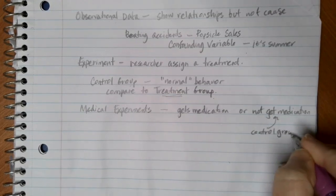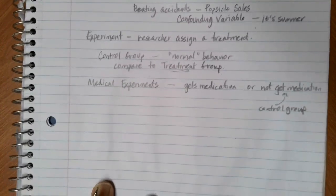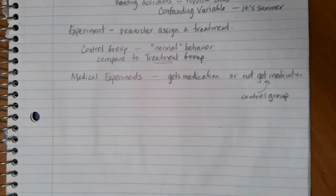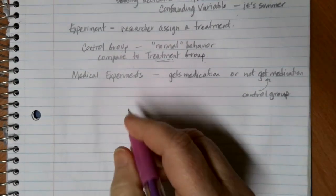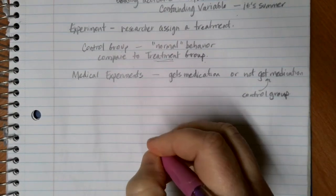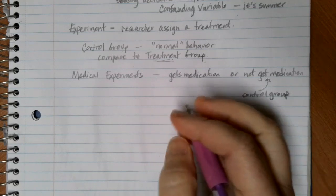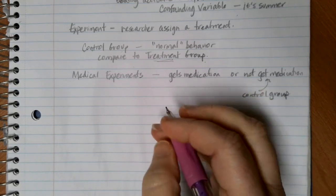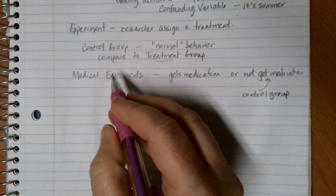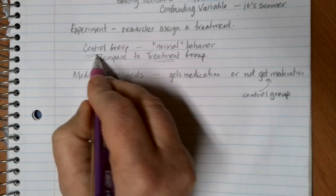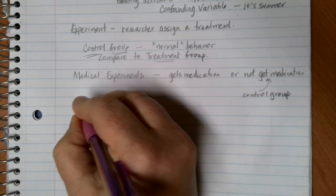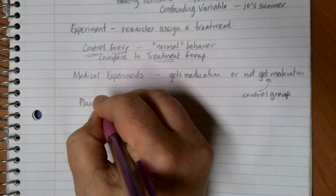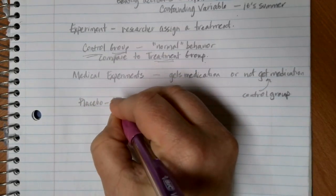Now, you need to be careful. There actually are some interesting studies, depending on what types of things you're measuring, that sometimes people just feel better if they think they're being helped. And so we can introduce in terms of medical experiments, we have these control groups, but we can also introduce what we call a placebo control group.